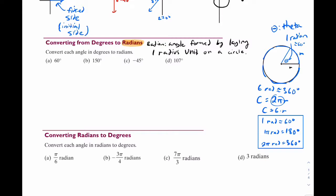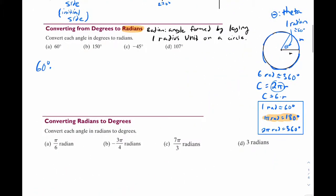It says convert each angle from degrees to radians. Simply take your 60 degrees and multiply it by the conversion factor, which is π over 180 — since π radians equals 180 degrees. The degrees cancel out; 180 reduces to 3. So now we have π over 3 radians. This is actually the one time in math and science where you don't even need a unit — if you write π over 3, it's assumed to be radians. Either way is fine.